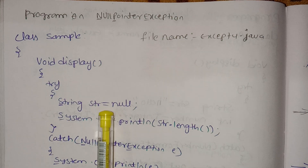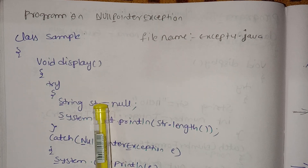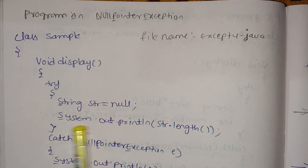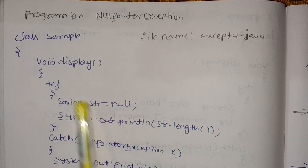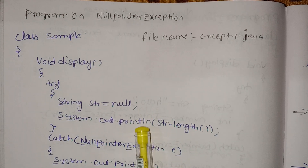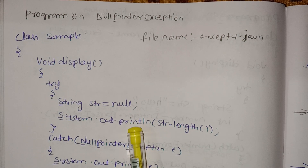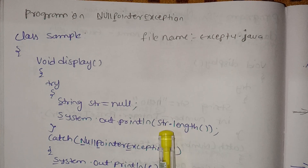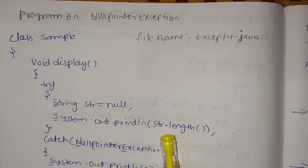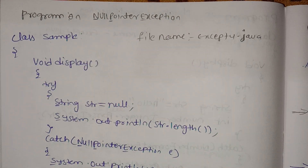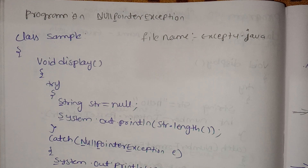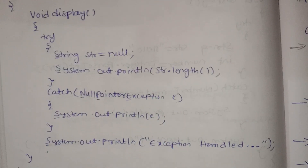We have to write the code in which we are expecting the exception. The function expects the string variable str with a null value. System.out.print is in java.lang. Next is str.length — here is the null pointer, here is a NullPointerException.